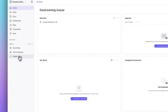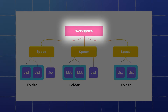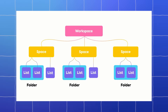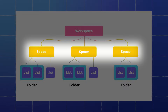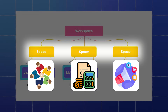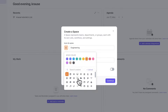We can now move forward by creating a new space from scratch. To do so we first need to understand the hierarchy of ClickUp. On top we have our workspace — this is the general overview of your whole account — and underneath that we have different spaces. These spaces represent different teams, departments, and groups inside your project.